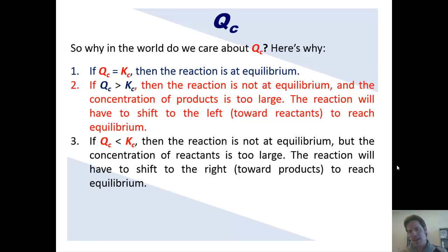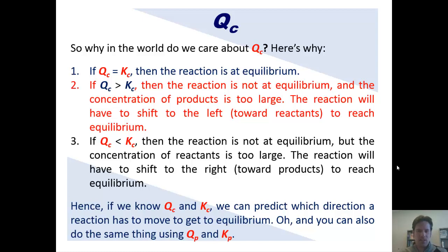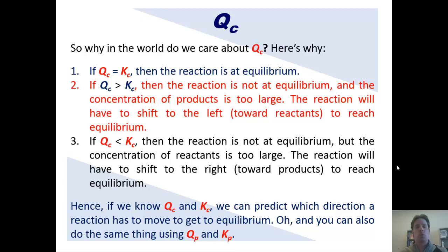In this circumstance, the reaction has to shift to the right toward products before it can reach equilibrium. So the point is, if we know QC and we know KC, then we can predict which direction a particular reaction has to move or shift in order to reach equilibrium. And you can also do the same thing using QP and KP.